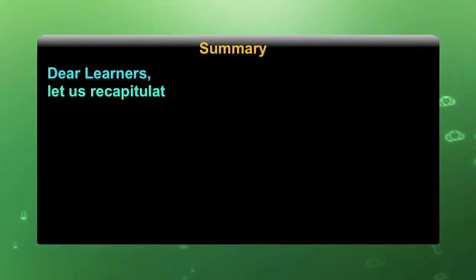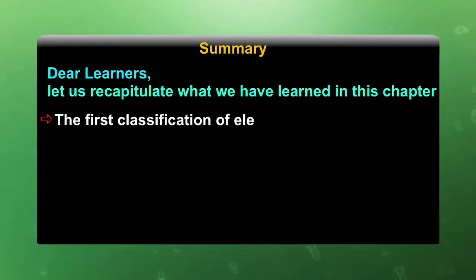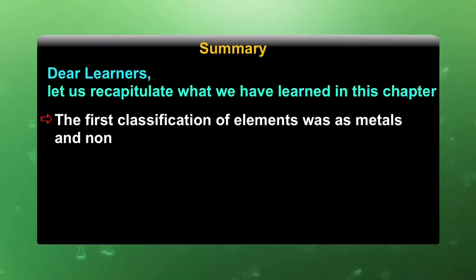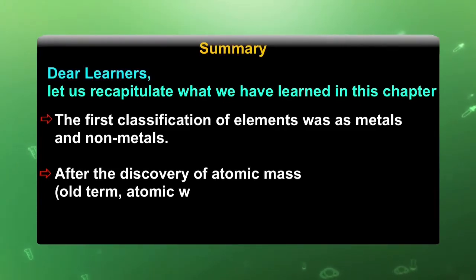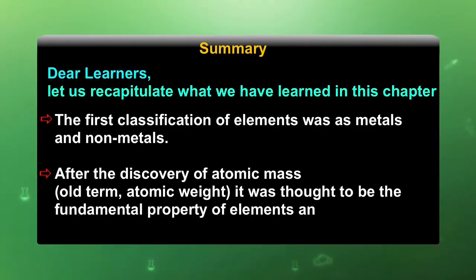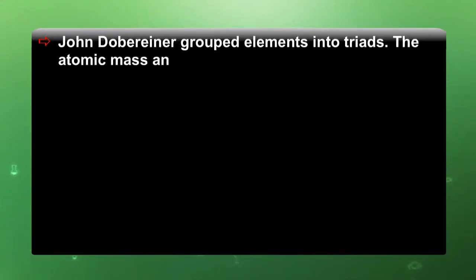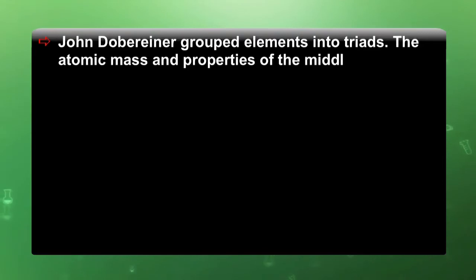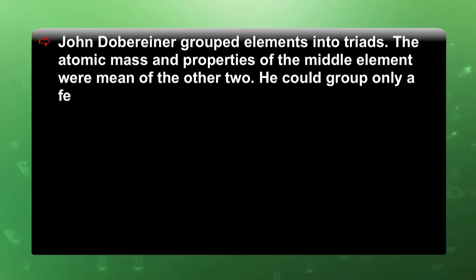Let us recapitulate what we have learned in this chapter. The first classification of elements was as metals and non-metals. After the discovery of atomic mass (old term: atomic weight), it was thought to be the fundamental property of elements and attempts were made to correlate it to their other properties. John Döbereiner grouped elements into triads, where the atomic mass and properties of the middle element were the mean of the other two, but he could group only a few elements into triads.